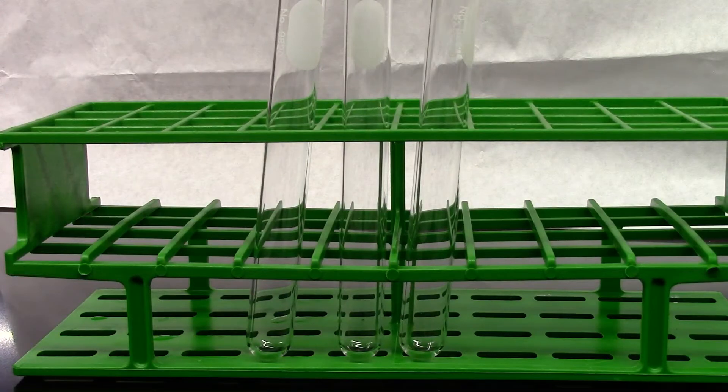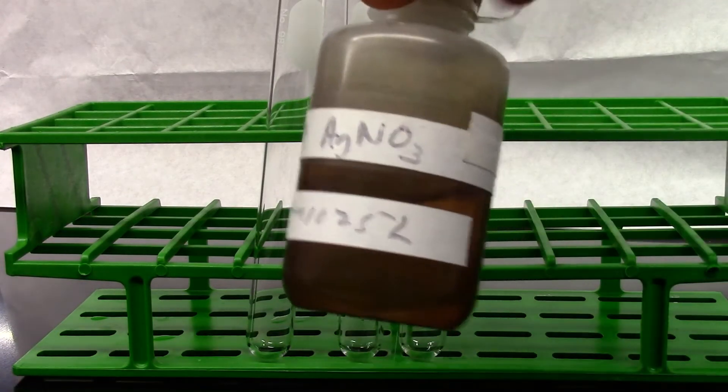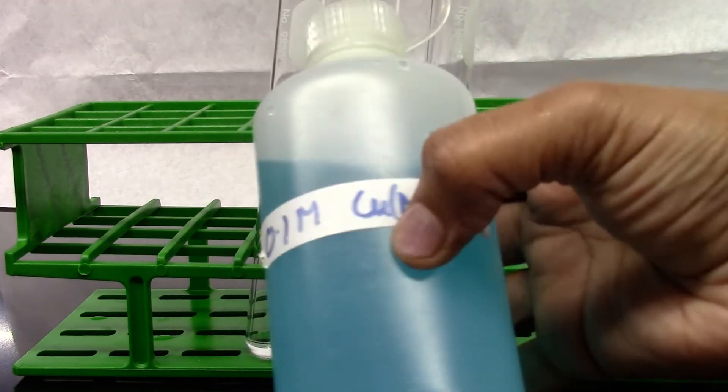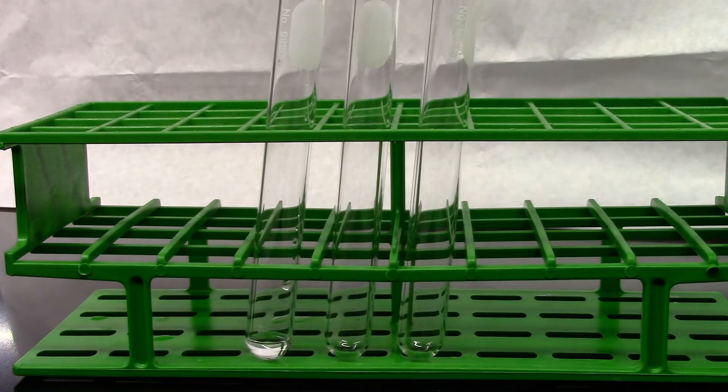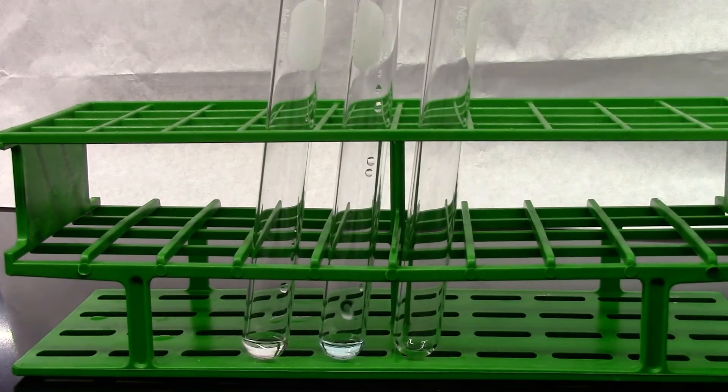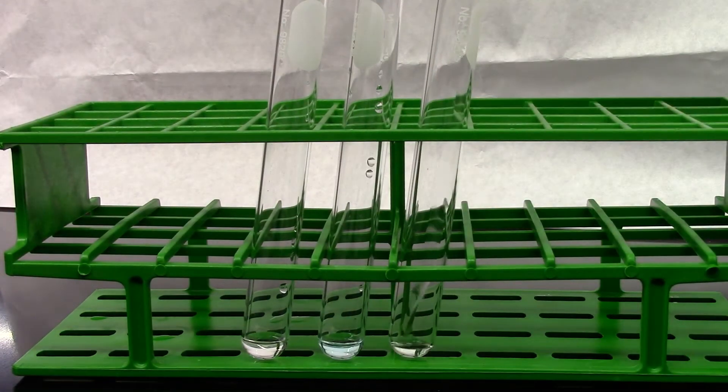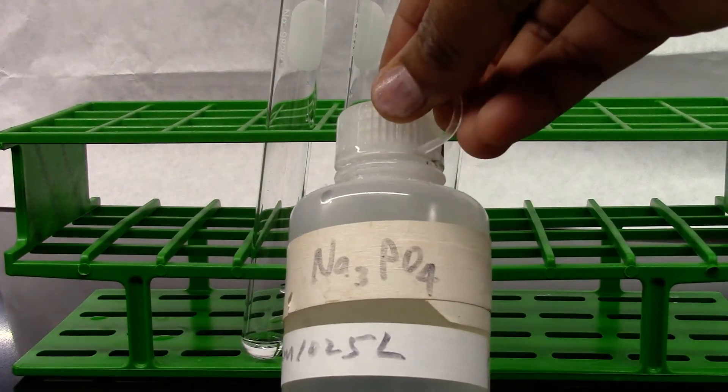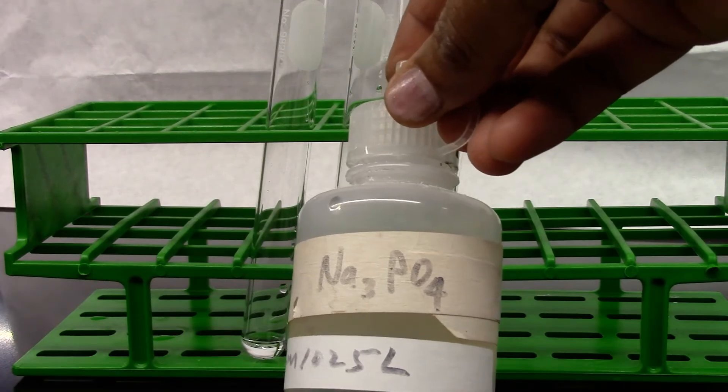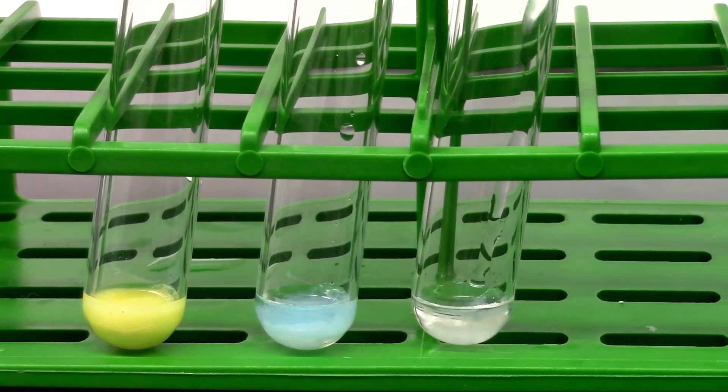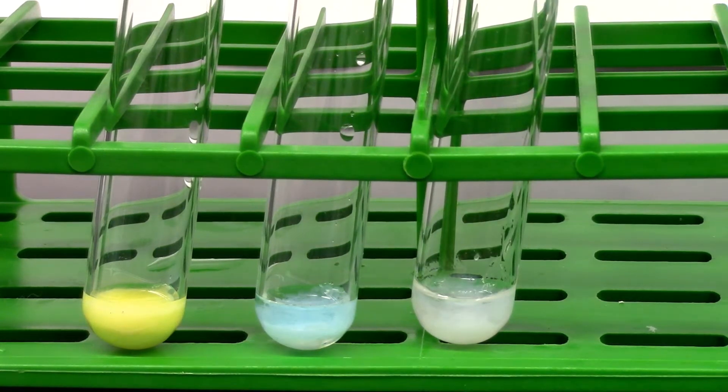So I have three test tubes. The first one I will be adding 10 drops of silver nitrate. Second test tube I'm adding 10 drops of copper nitrate. Third test tube I'm adding 10 drops of aluminum nitrate. To each of these test tubes I'm adding a few drops of sodium phosphate. All three test tubes have precipitated. Record the observation.